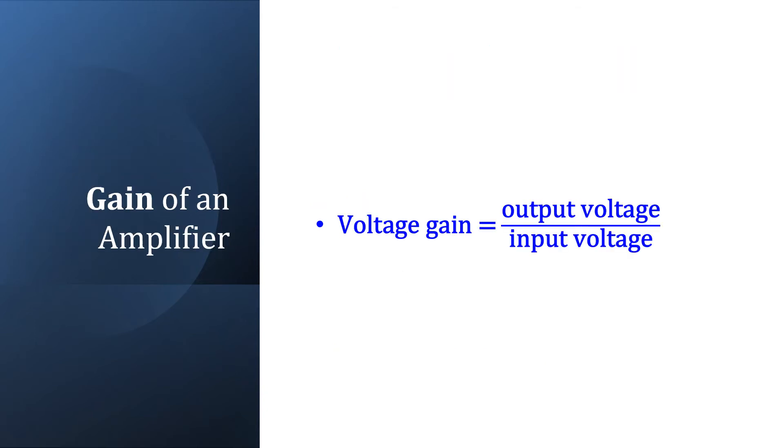Define gain of an amplifier. Gain of an amplifier is equal to ratio of output voltage to input voltage.